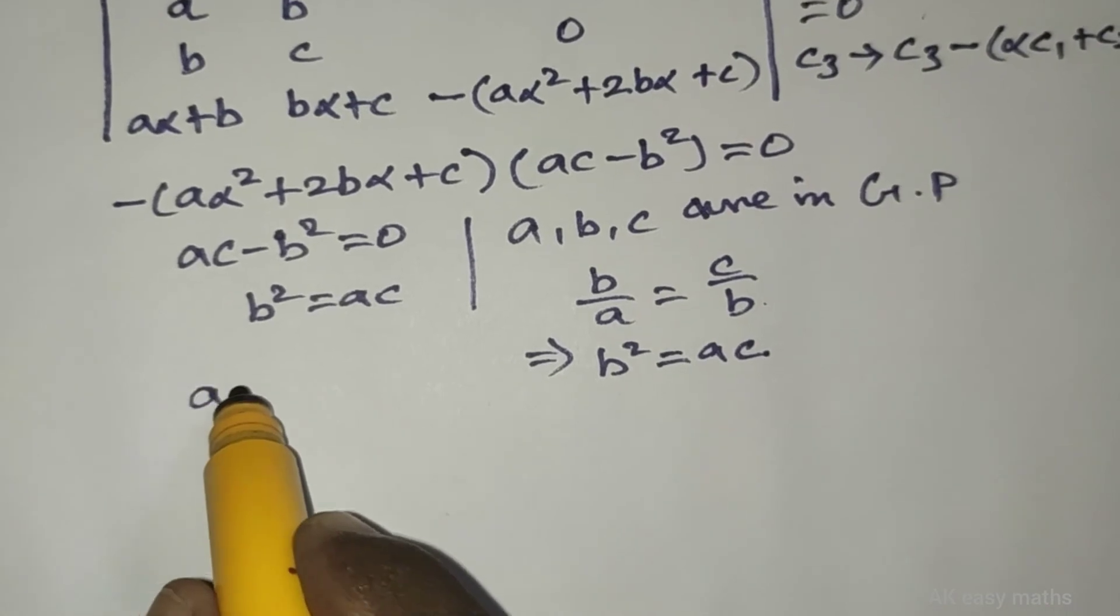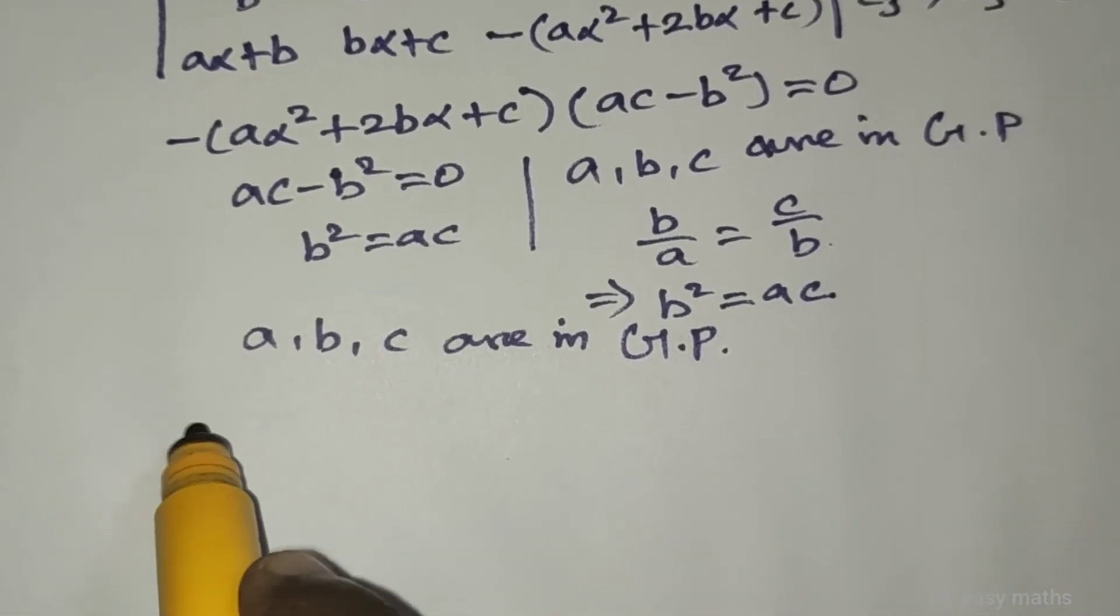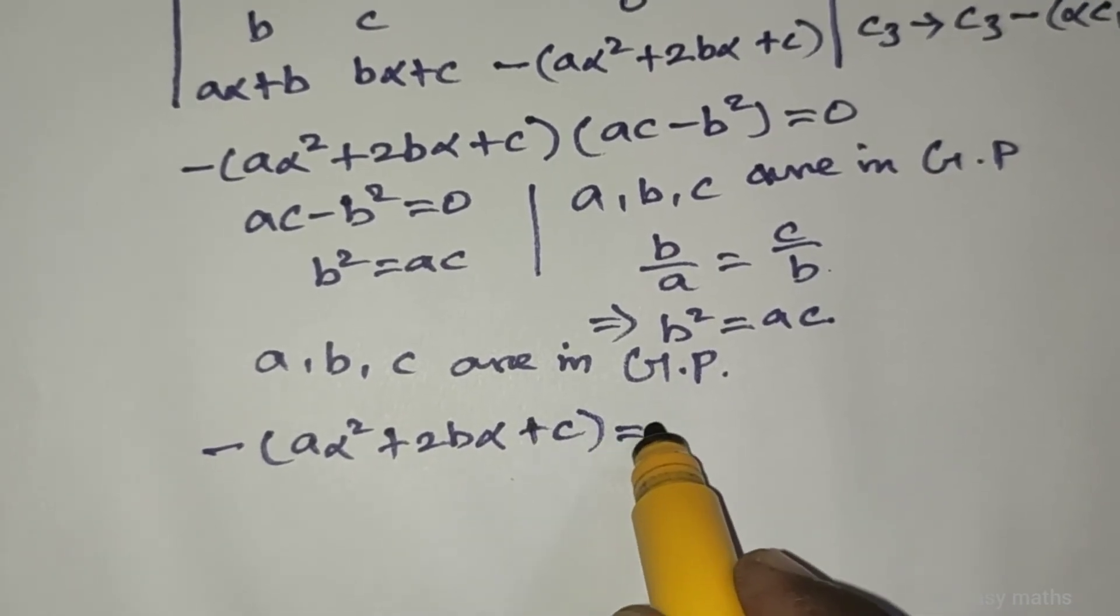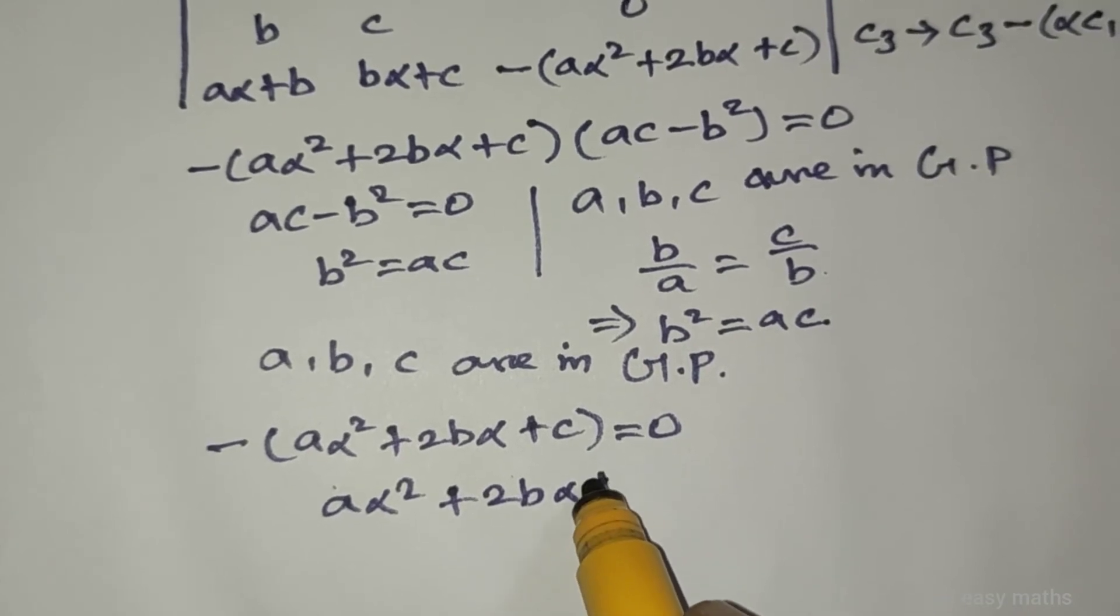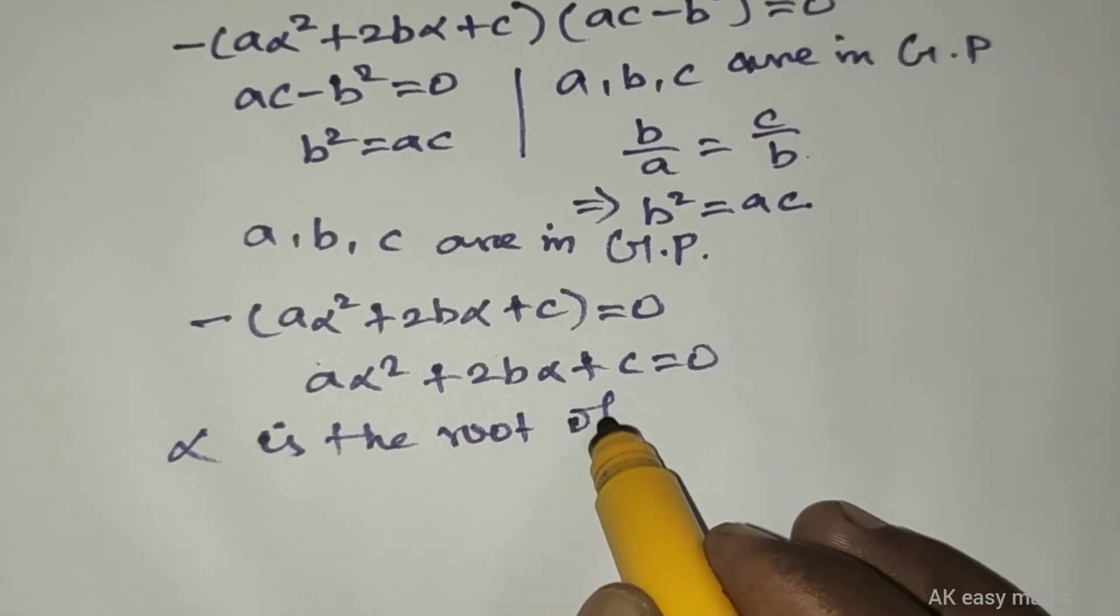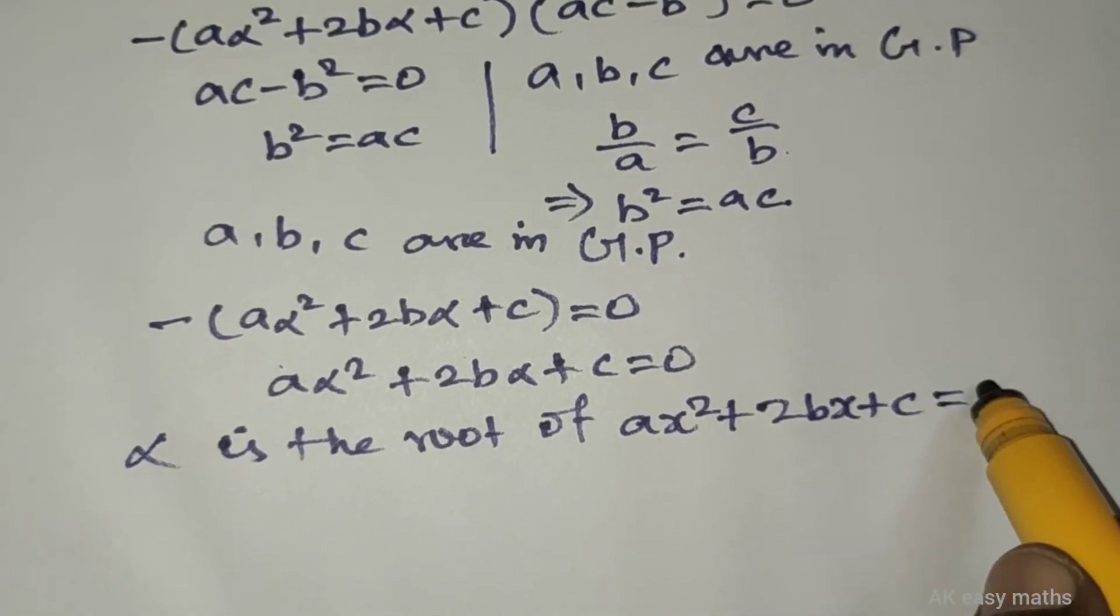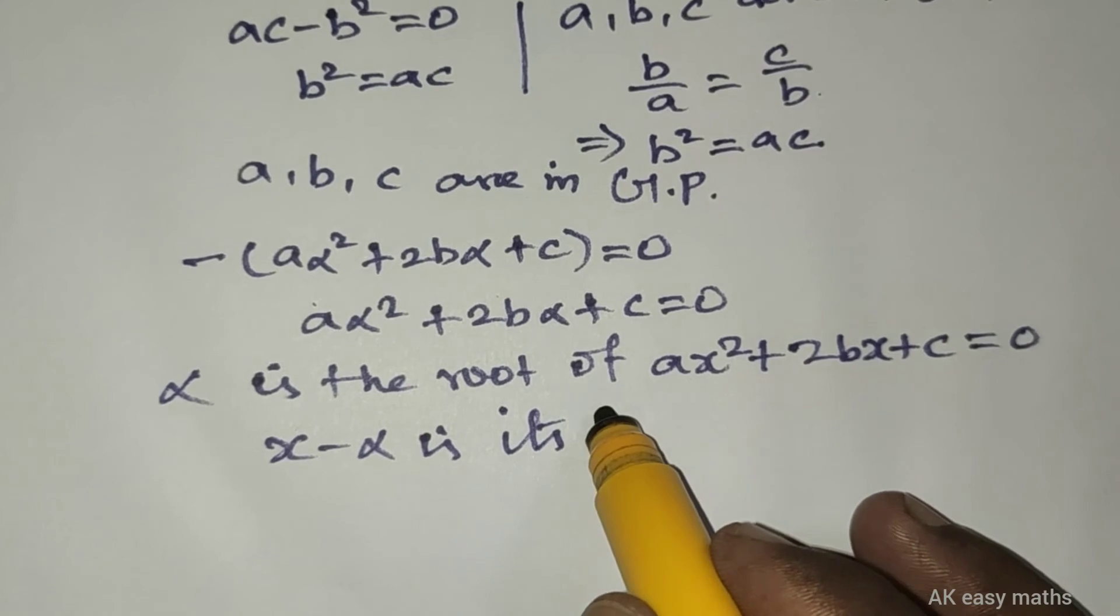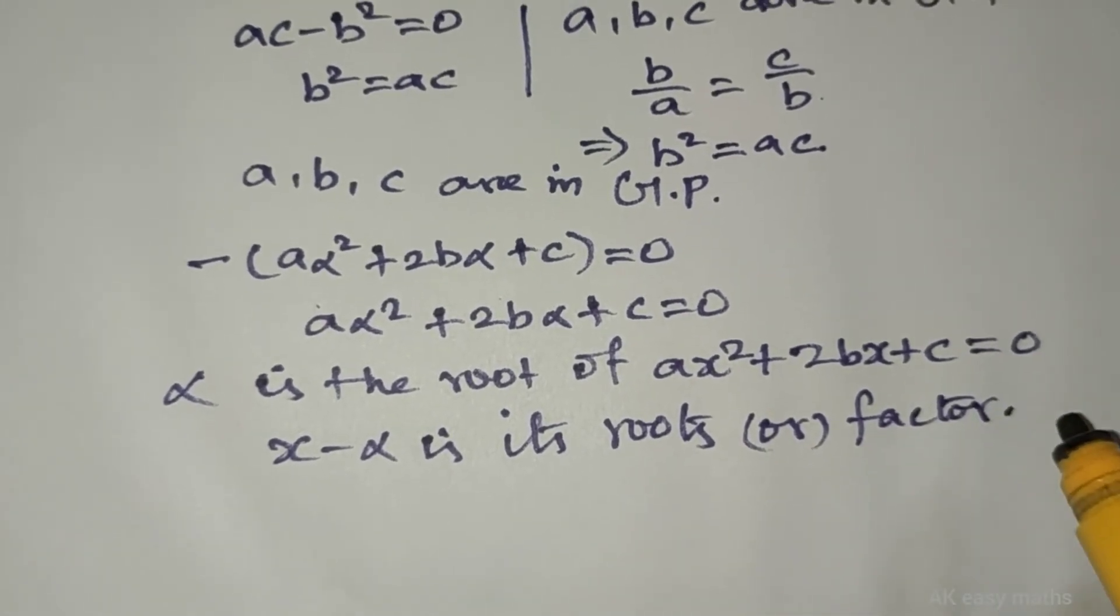The other explanation: minus a alpha squared plus 2b alpha plus c equal to 0. Removing the minus, a alpha squared plus 2b alpha plus c equal to 0. Therefore, alpha is the root of ax squared plus 2bx plus c equal to 0.